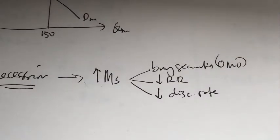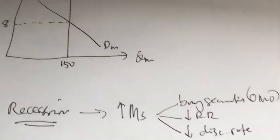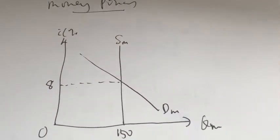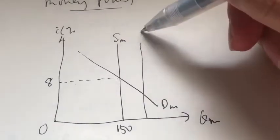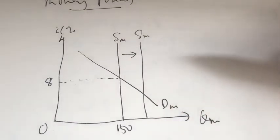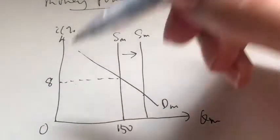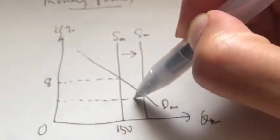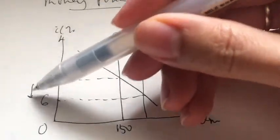Now I'm going to show you what happens when the central bank manages to increase the money supply and how it tackles the problem. When money supply increases, the supply curve shifts to the right. Assuming there's no change in the demand for money, we will have a lower interest rate — say this falls to 6%.